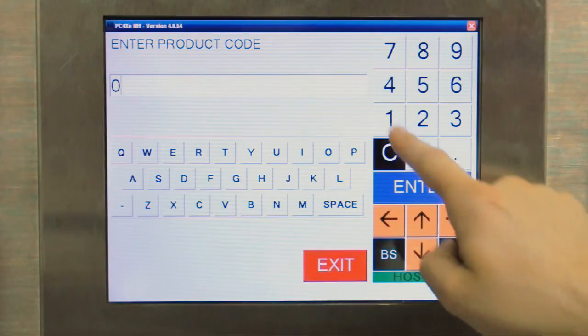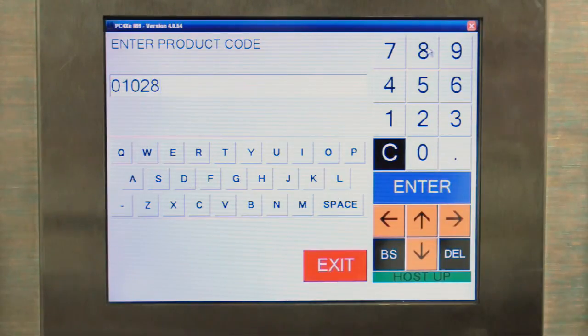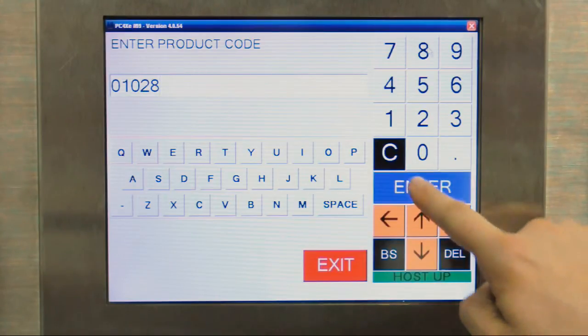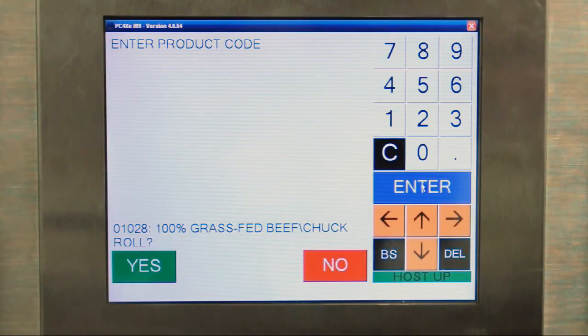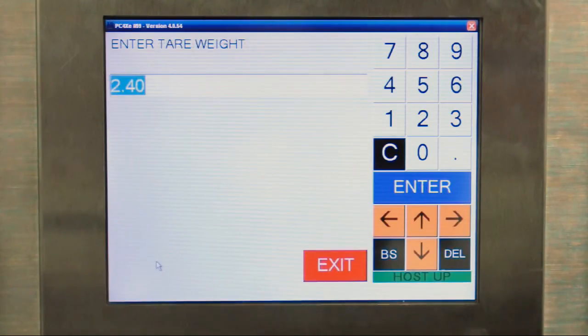It asks for the product code 01028. Your workers either need to know the product codes or we can put a sheet on the wall with a barcode for each product so they can scan the barcode for that product to load the product number. This is set up for a meat company so it says 100% grass-fed beef. Yes to confirm that.